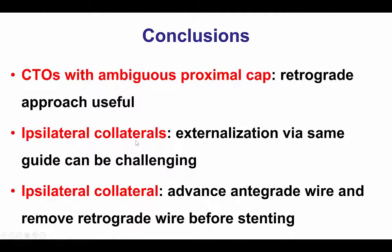This case is a nice illustration of how the retrograde approach can be useful for clarifying proximal cap ambiguity. It shows that when we have ipsilateral collaterals, externalization can be done through the same guide, but this can make things more complicated due to having both ends of the wire within the same guide catheter. This case could probably have been done more simply using a ping-pong guide catheter, externalizing the retrograde guidewire through a second guide catheter. The third point is that in cases of externalization through an ipsilateral collateral, an antegrade wire needs to be advanced before stenting, because we do not want to jail the retrograde externalized guidewire — facilitated by using a dual-lumen microcatheter followed by standard stent implantation. Thank you.